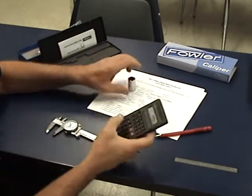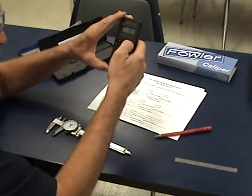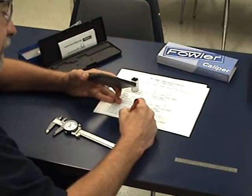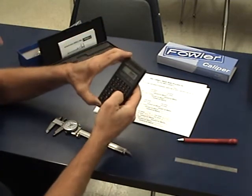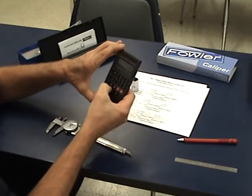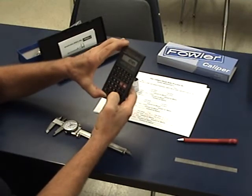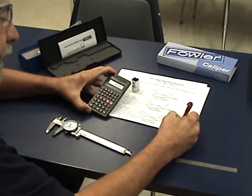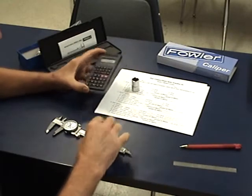Now convert that to metric. 0.726 times 25.4. Eighteen point four four. Eighteen point four four millimeters. MM afterwards means millimeters.